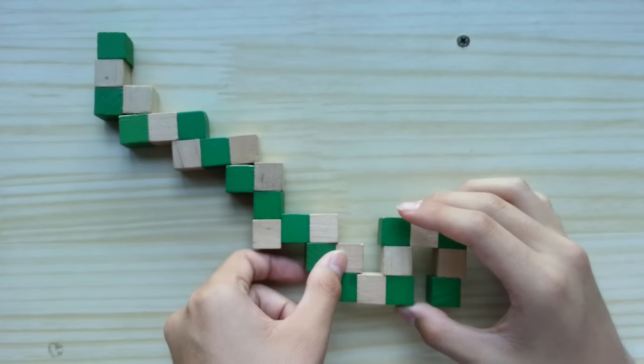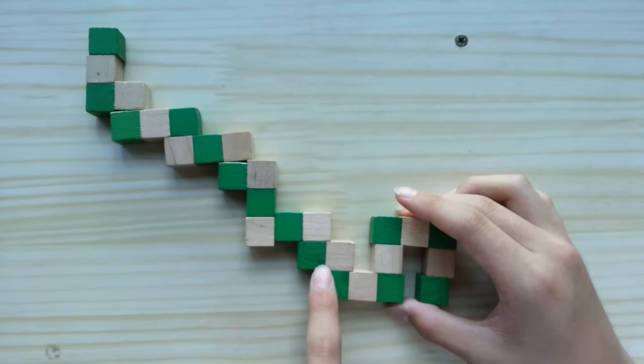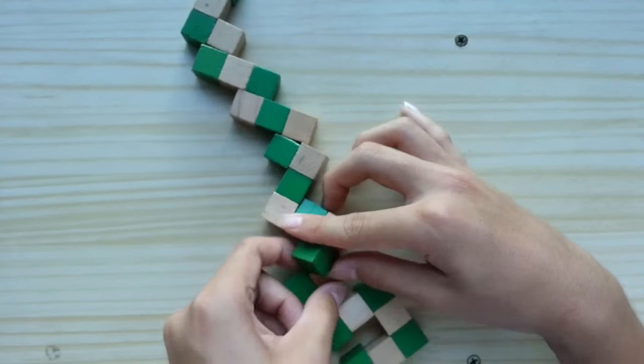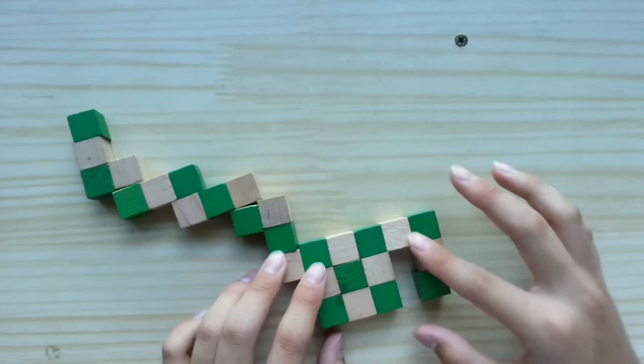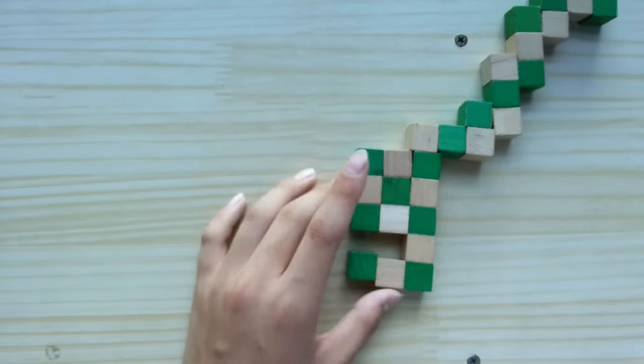Now what you do next is grab these two. Not the bottom one or the top one. The middle two blocks. And just connect it. Just these two blocks. Connect it together like that. So you'll get the shape. You'll get a nine. Looking like this.